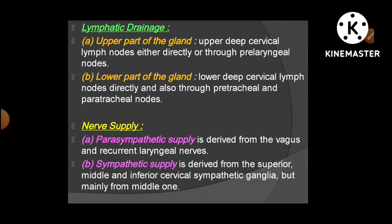For lymphatic drainage, the upper part of the gland drains into the upper deep cervical lymph nodes either directly or through pre-laryngeal nodes, while the lower part drains into the lower deep cervical nodes directly and also through the pretracheal and paratracheal lymph nodes. The nerve supply: parasympathetic is derived from the vagus and recurrent laryngeal nerves, while sympathetic is derived from the superior, middle, and inferior cervical sympathetic ganglia — mainly the middle one.